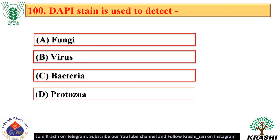Question number 100. DAPI stain is used to detect bacteria — option C.